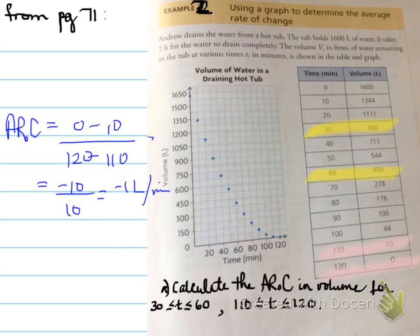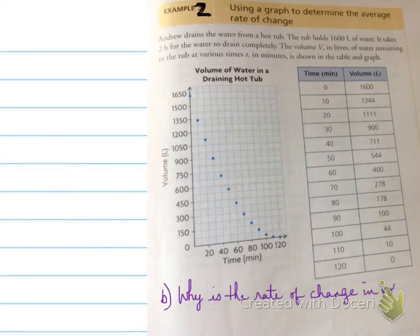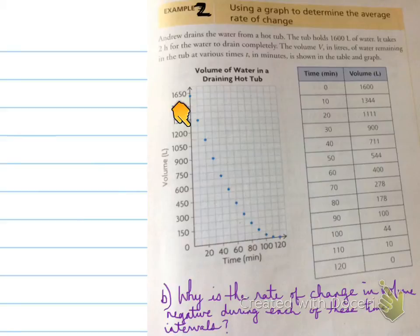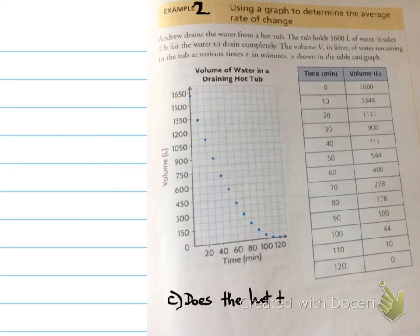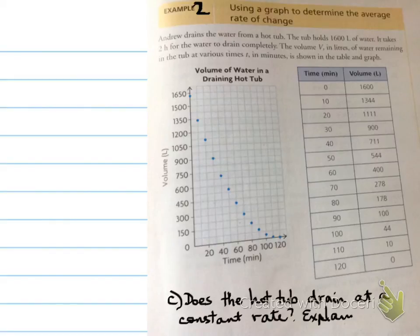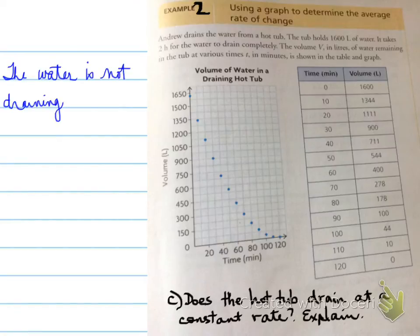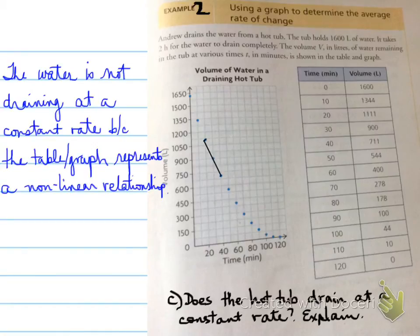Part B: Why is the rate of change in volume negative during each of these time intervals? If you look at what this function is doing as we move from left to right, the function is decreasing. So the volume is decreasing as we move from left to right - that's why the rate of change is negative.